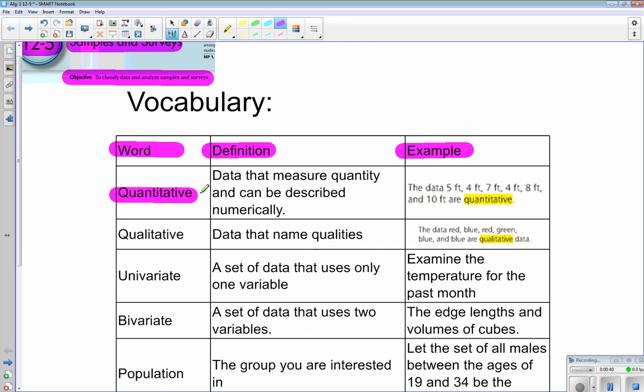So quantitative is data that can measure quantity and can be described numerically. For example, when we collect data that's 5 feet, 4 feet, 7 feet, 4 feet, 8 feet, and 10 feet are all quantitative because these are measurements or distance or something that is the amount, which is different than qualitative.